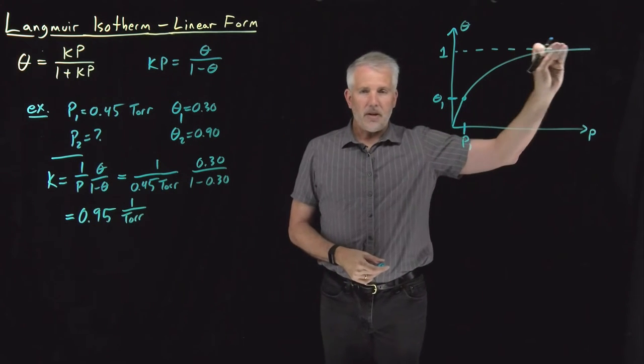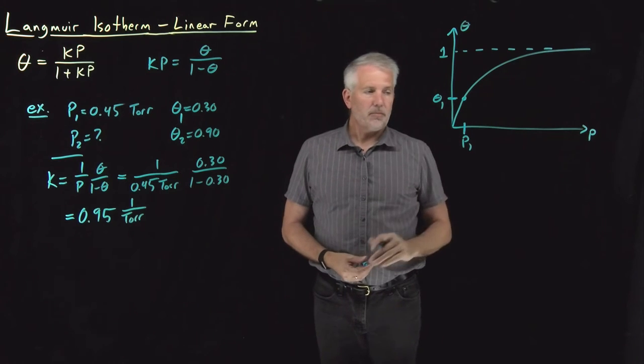So k needs to have units of 1 over pressure, so that when I multiply it by pressure, this quantity ends up unitless, just like this side does. That's given me the value of k. Like I said, that determines the entire isotherm. Knowing the value of k, we can plot this entire isotherm.